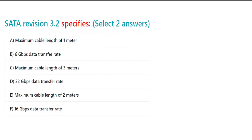SATA Revision 3.2 specifies, select two answers. A. Maximum cable length of 1 meter. B. 6 Gbps data transfer rate. C. Maximum cable length of 3 meters. D. 32 Gbps data transfer rate. E. Maximum cable length of 2 meters. F. 16 Gbps data transfer rate.